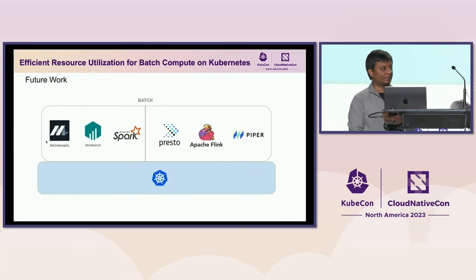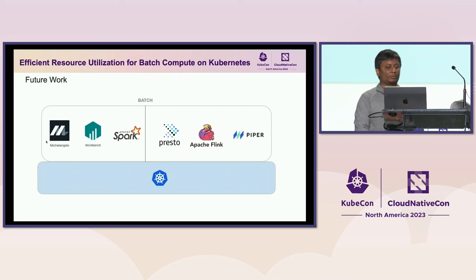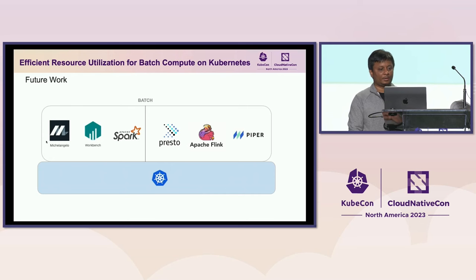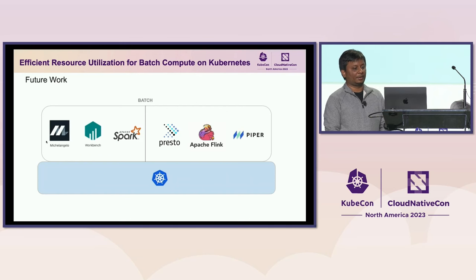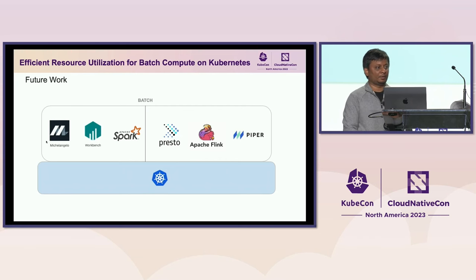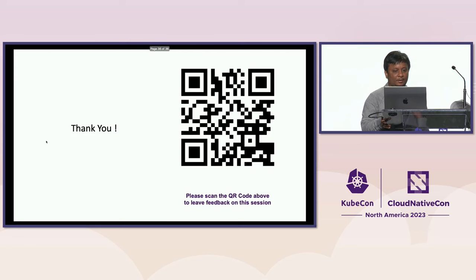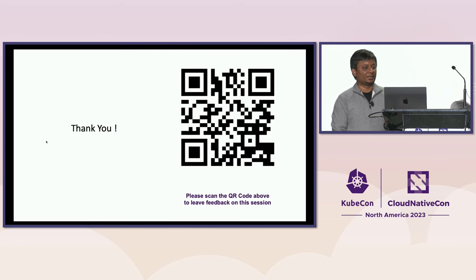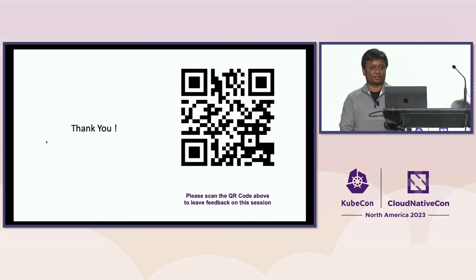Coming to future work: so far we have solved the problems of running batch workloads on Kubernetes for machine learning jobs by Michelangelo, data science workbenches, and Spark jobs. Next year we are going to target Presto, Apache Flink, and our internal pipeline execution framework Piper, all running on Kubernetes on shared clusters. That's all we had for today — thanks all of you for patiently listening. Please share your feedback using the QR code.